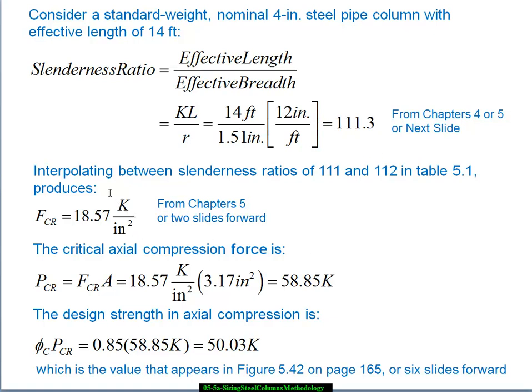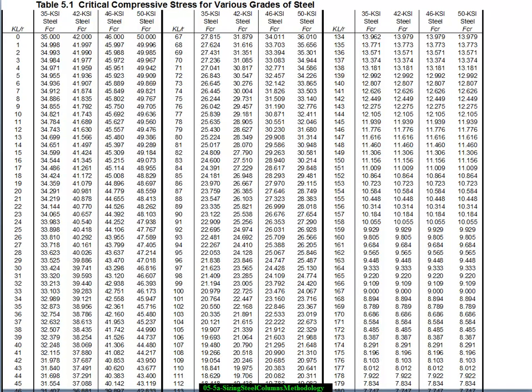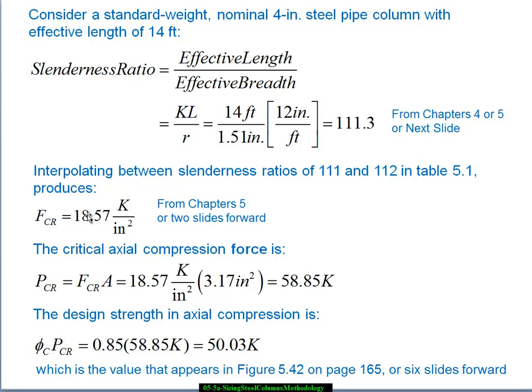So I take 14 feet divided by 1.51 inches. Then I've got to clean up my units because the slenderness ratio is supposed to be dimensionless. And when I calculate all that out, I get 111.3. All right, now if we go to our tables, let me find that right here. This is, again, our critical compressive stress for various grades of steel. I've squeezed it down so that we can see the top and we can also see 111, 112. So at 111 slenderness ratio, the critical stress is 18.69. It goes down as the column becomes more slender. We're at 111.3. And you don't need to go through these numbers. But for the mathematics I've done here, I've interpolated between those two numbers to get us to 111.3. So I go back here and I find that the critical stress or failure stress is 18.57 kips per square inch, which I got through that interpolation process.